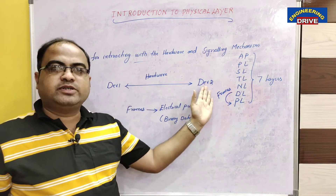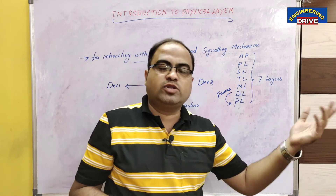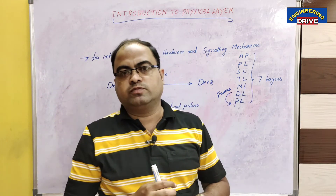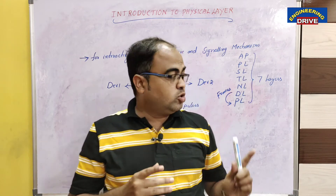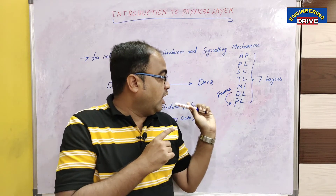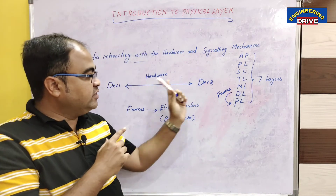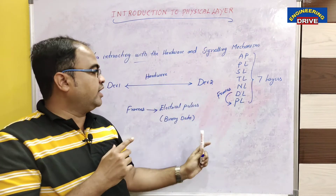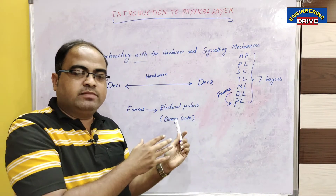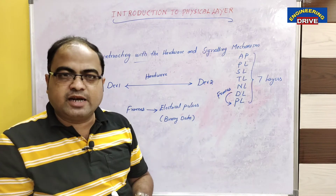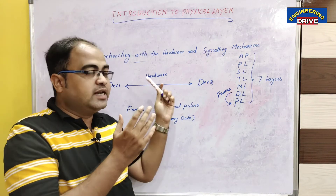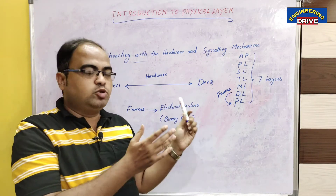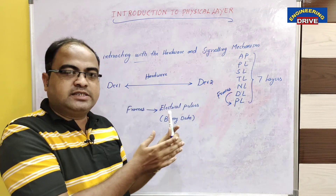This binary data will be transmitted to the devices, so device one will easily transmit that binary data to device two. How will physical layer convert those frames into electrical pulses? What type of signaling mechanism is used between the devices?